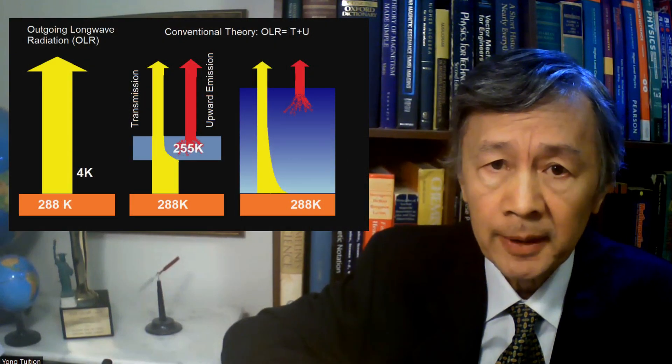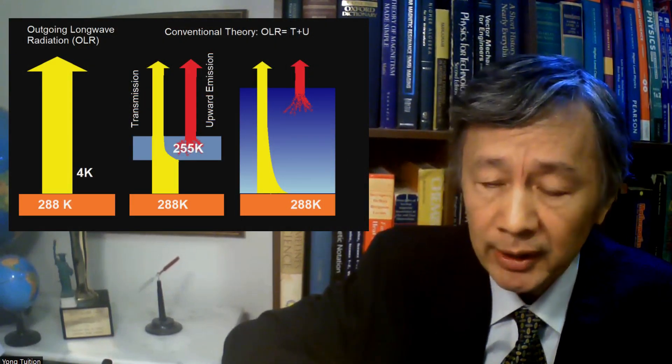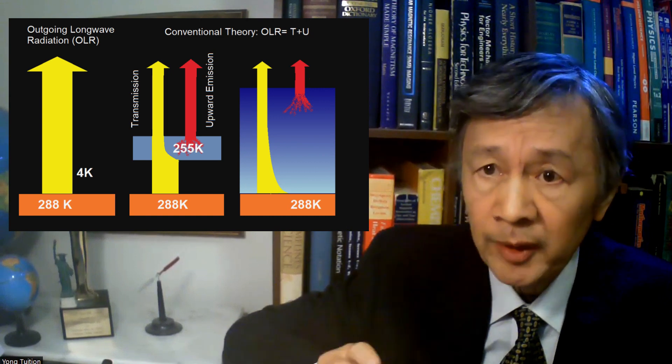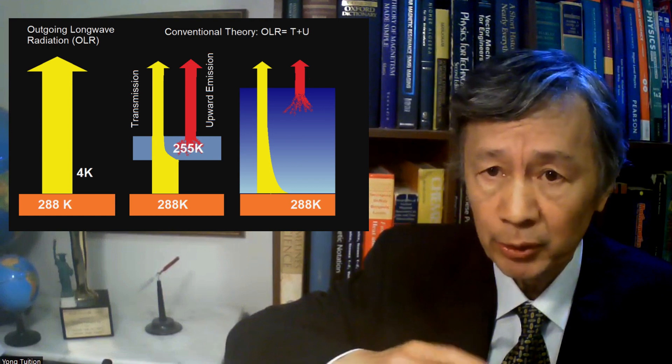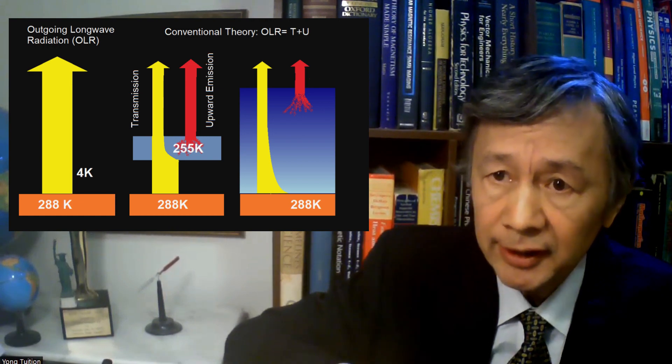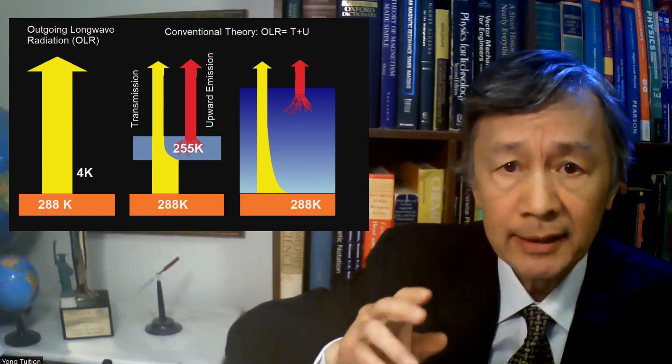One can call this as a real blanket effect, the blanket made by air molecules, 99% by nitrogen and oxygen gases. Based on this corollary of thermodynamics law, I have proposed this formula for the outgoing infrared radiation, which is completely irradiated by the atmosphere.